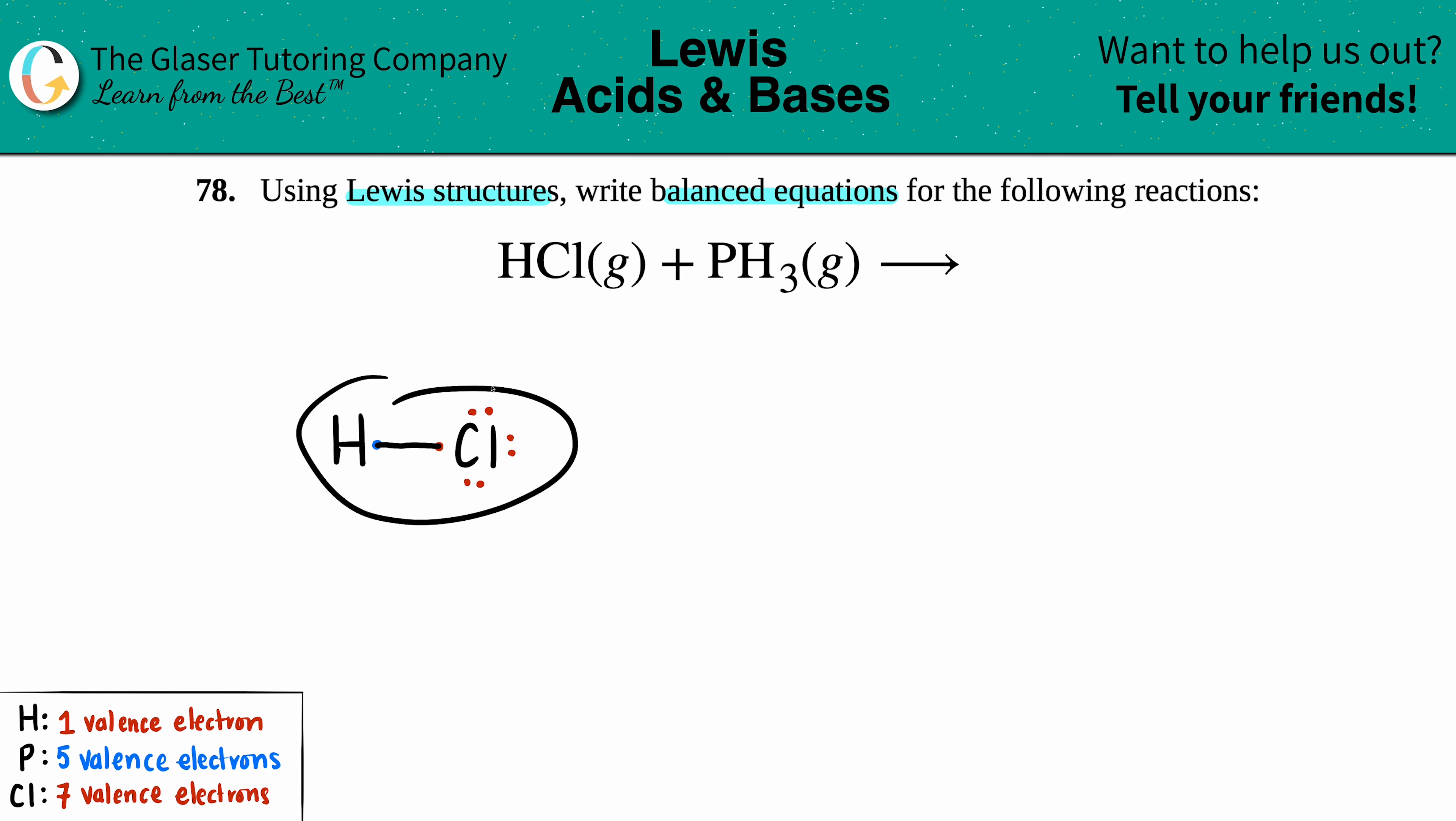Plus PH3: phosphorus in the middle surrounded by three hydrogens. Remember, hydrogen can never be in the middle. Each hydrogen has one electron and phosphorus has five valence electrons—one, two, three, four, five. We single bond it up, and hydrogen only wants to have the one bond. Once we do this, phosphorus has the octet, so we're good to go.